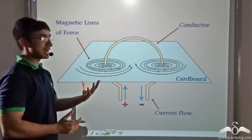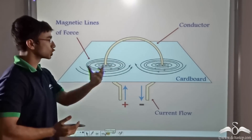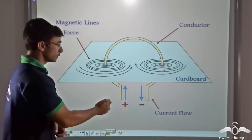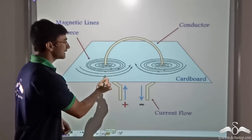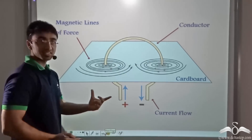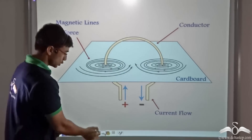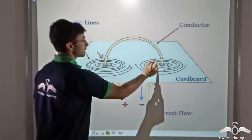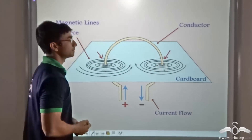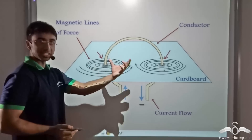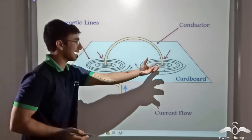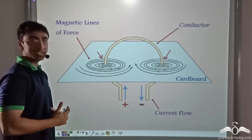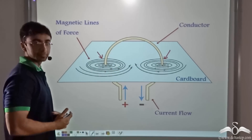The schematic of the experiment is shown here. We have considered a cardboard on which the current carrying conductor is placed in the shape of a loop. Two holes have been made through which the conductor passes through the cardboard. Through the placement of iron filings on both sides, we are able to find out the pattern of the magnetic field.